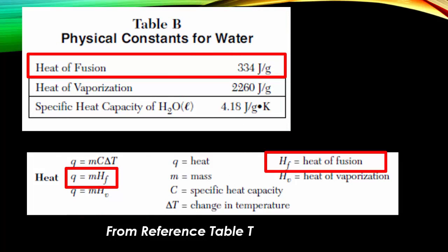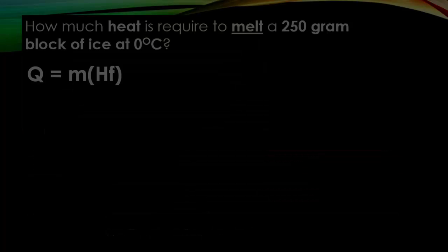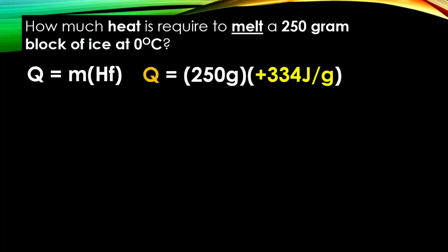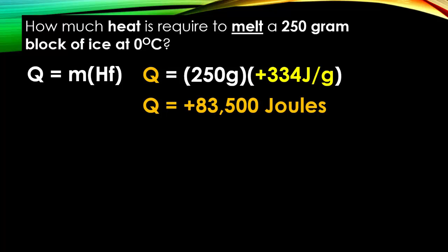The heat of fusion formula is found on Table T: Q equals m times Hf. Hf represents the heat of fusion, which is found on Table B and for water is 334 joules per gram. For example: how much heat is required to melt a 250-gram block of ice at 0 degrees Celsius? Using Q equals m times Hf, with a mass of 250 grams and Hf of positive 334 joules per gram, we get 83,500 joules of energy needed to melt the sample.